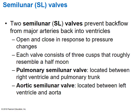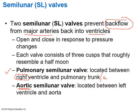The same concept of pressure difference applies to the semilunar valves. The semilunar valves' goal is to prevent backflow from the major arteries back into the ventricles. We have two: the pulmonary semilunar valve on the right side, regulating blood flow between the right ventricle and the pulmonary trunk, and the aortic semilunar valve on the left side, regulating flow between the left ventricle and the aorta. The semilunar valves are all made of three cusps, they resemble a half moon shape, and they do not have chordae tendineae.